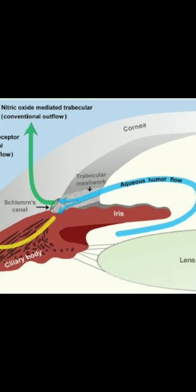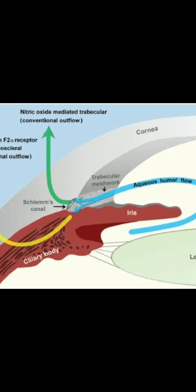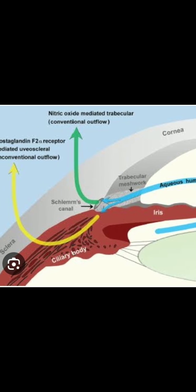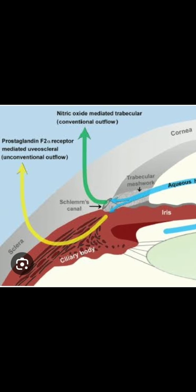This aqueous humor is ultimately drained by the nitric oxide-mediated trabecular meshwork, which is the main conventional pathway of drainage through the canal of Schlemm and episcleral veins, and also by uveoscleral outflow — that is, prostaglandin-mediated outflow — which is an unconventional outflow.